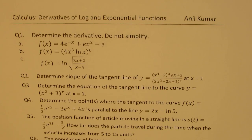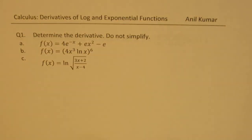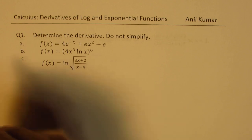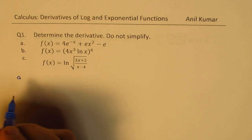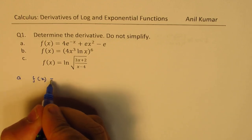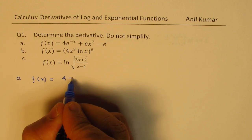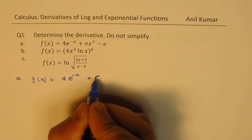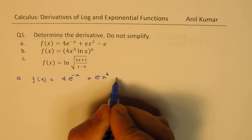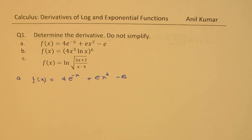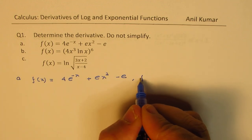So let's begin with the very first question, which is relatively straightforward. We just need to find derivatives of logarithmic and exponential functions to begin with. Question number 1A: we are given that the function f(x) is equal to 4e to the power of minus x, plus ex squared, minus e. So we need to find the derivative of this particular function.